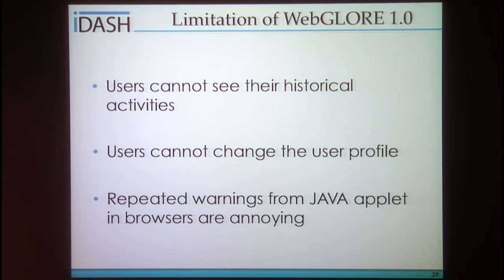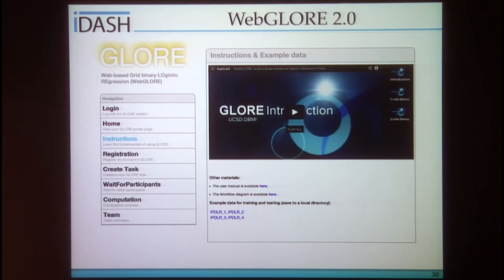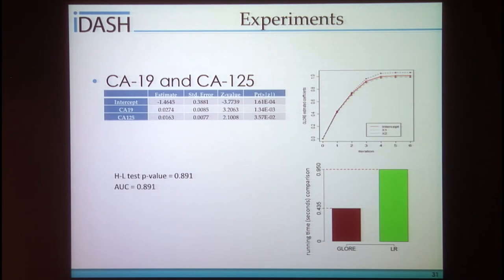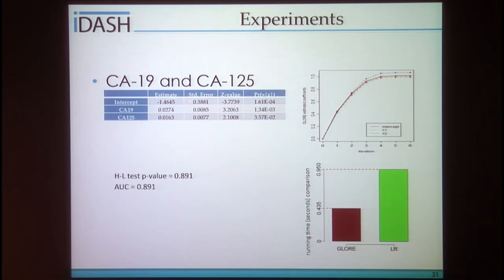Although WebGlow 1.0 provides fundamental functionalities for online collaboration, it's still missing a number of useful components. We recently improved WebGlow 1.0 to address these limitations. I'll now show validation experiments using two clinical datasets. The first is cancer biomarker data, which has two confounders and one binary outcome indicating whether the patient has breast cancer.